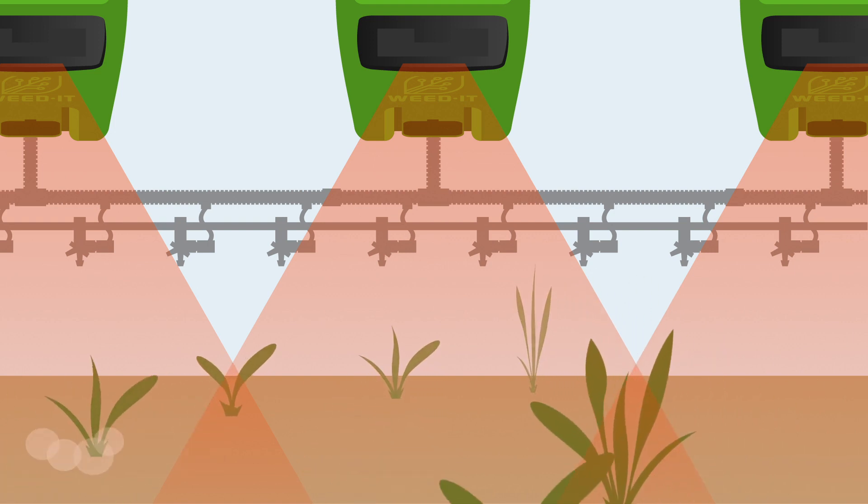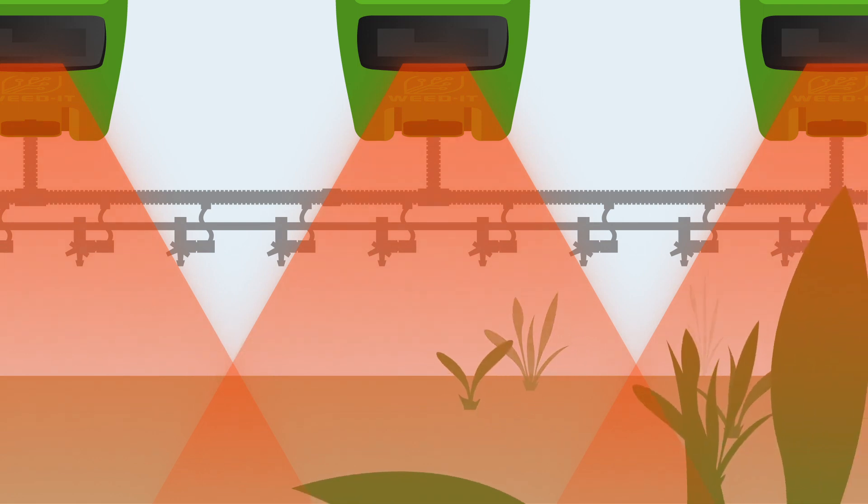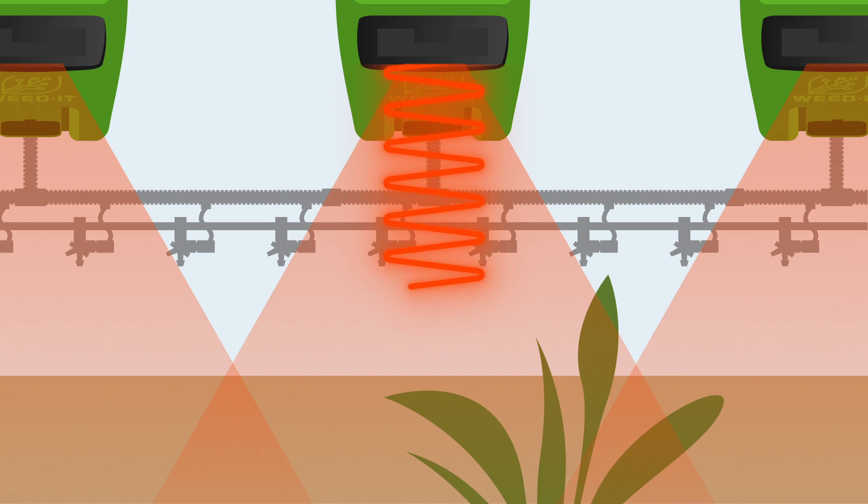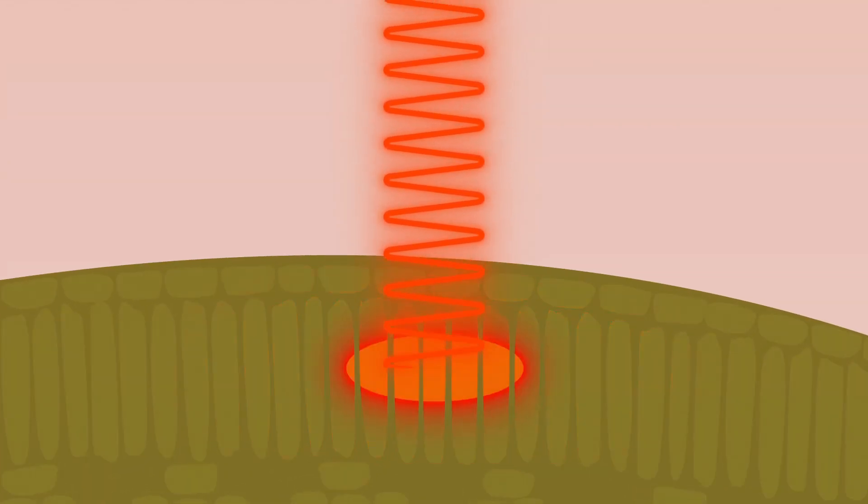It all starts with the sensor emitting red light towards the soil and plants. The emitted red light is partly absorbed by the plant's chlorophyll for photosynthesis.